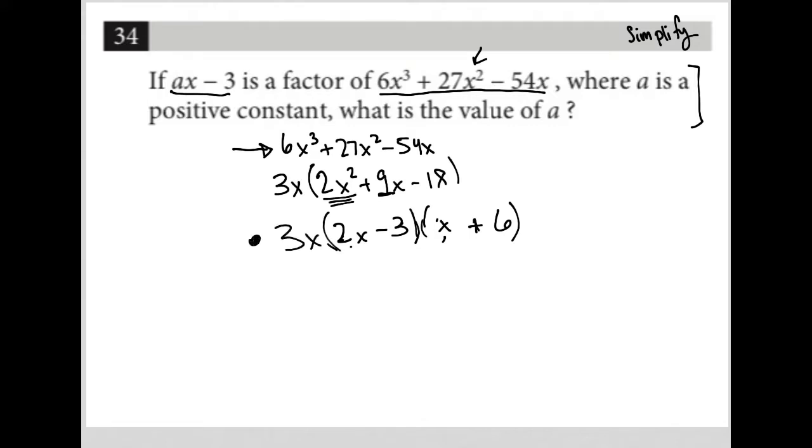So here is the fully factored form of my original question. The question says that ax minus 3 is a factor. So my factors are 3x, 2x minus 3, and x plus 6.